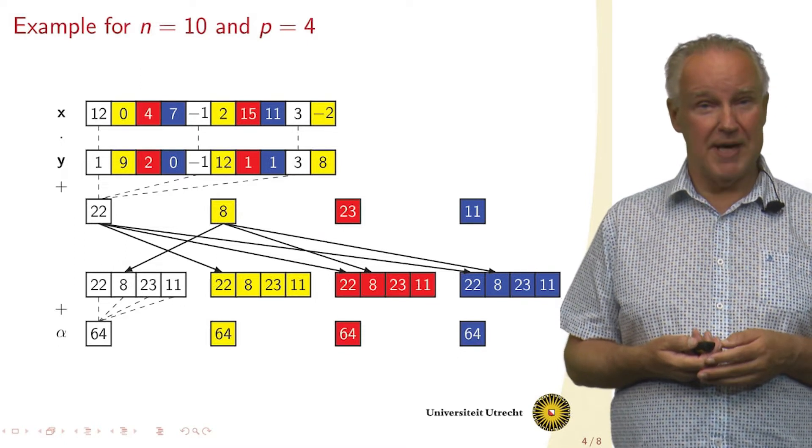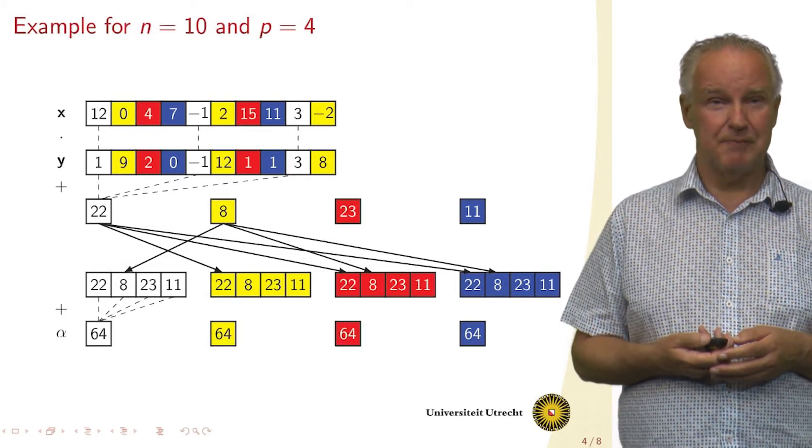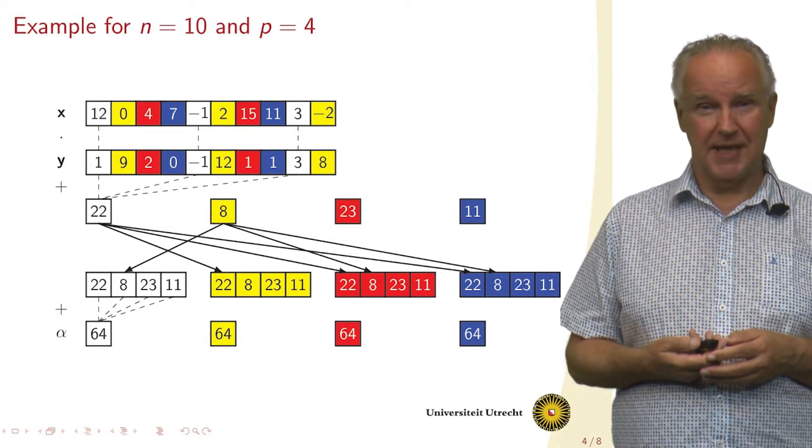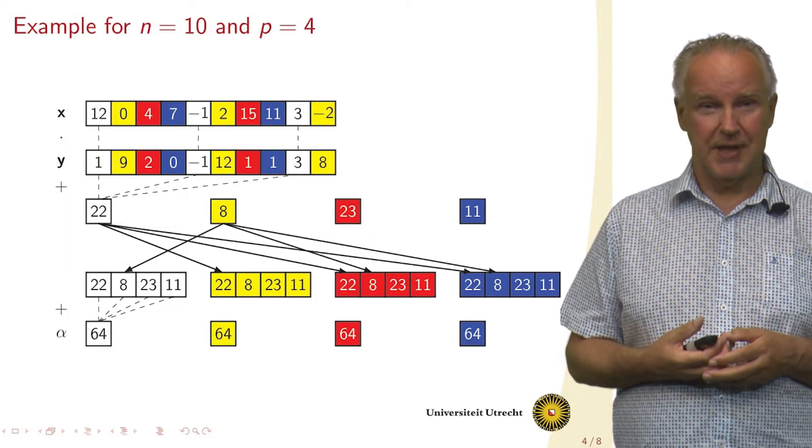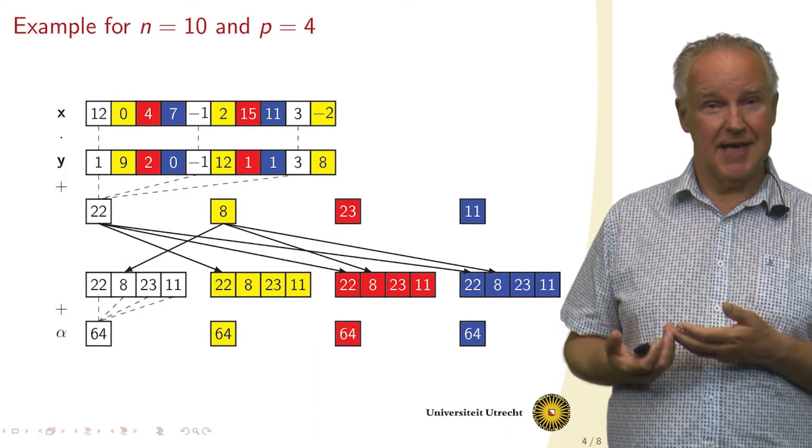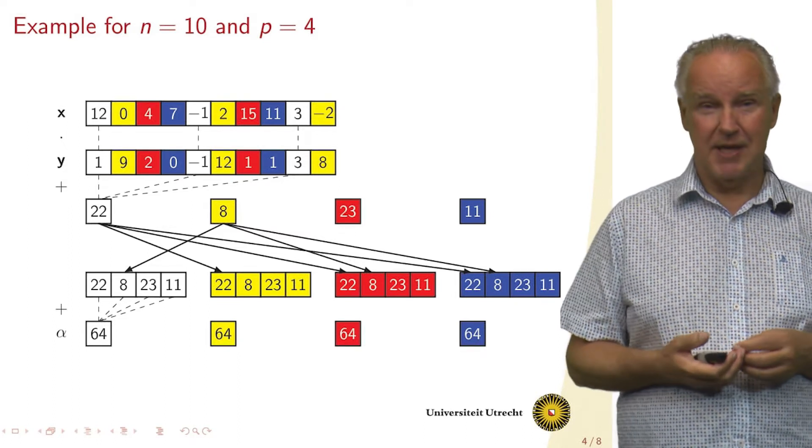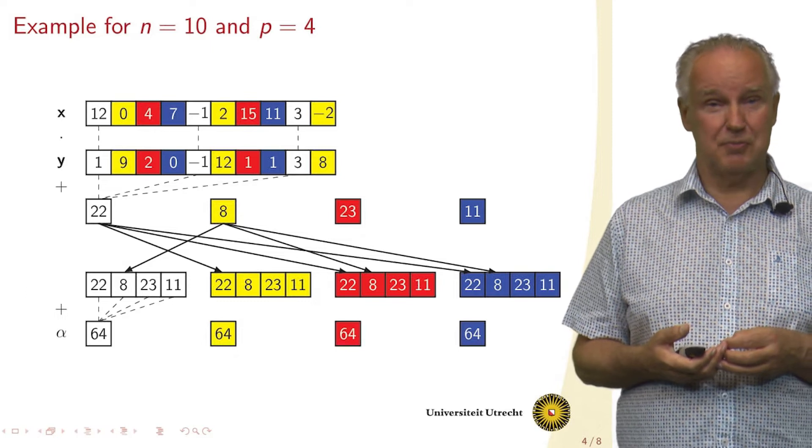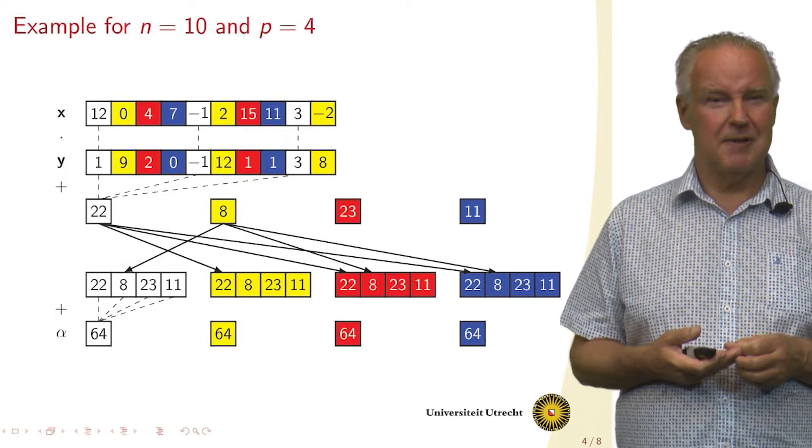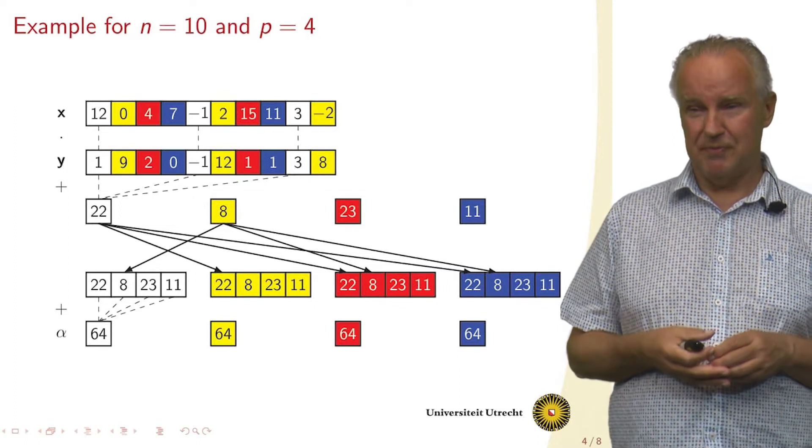So we multiply 12 by 1, which gives 12. Then minus 1 by minus 1, which is also on the white processor, that gives plus 1. And then we multiply 3 by 3, we get 9, also on the white processor. And then the white processor adds up the 12, the 1 and the 9, and gets 22. Now the other processors, in the same time, they also perform a local inner product computation. So the yellow processor gets the result 8, and the others also have their own results.